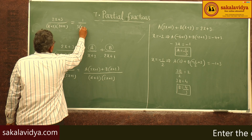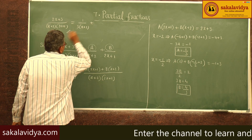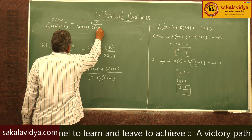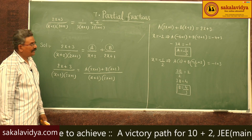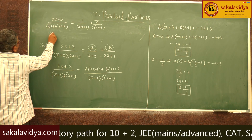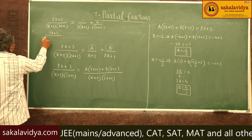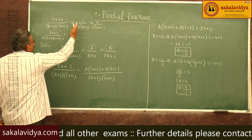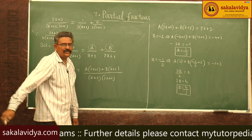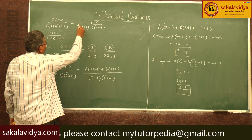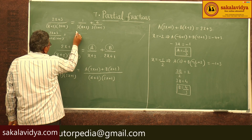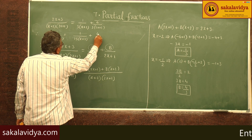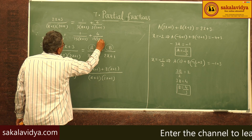Now we substitute the A and B values. So (2x+3) divided by (x+2)(2x+1) equals (1/3)/(x+2) + (4/3)/(2x+1). But this is not the final answer. We need (2x+3) divided by 5(x+2)(2x+1), so we multiply everything by 1/5, giving 1/(15(x+2)) + 4/(15(2x+1)).